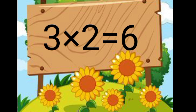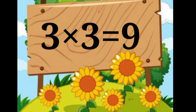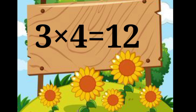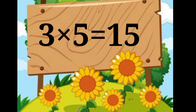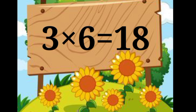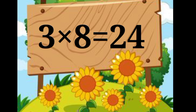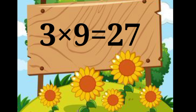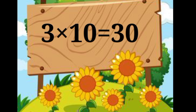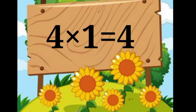3 ones are 3. 3 twos are 6. 3 threes are 9. 3 fours are 12. 3 fives are 15. 3 sixes are 18. 3 sevens are 21. 3 eights are 24. 3 nines are 27. 3 tens are 30.